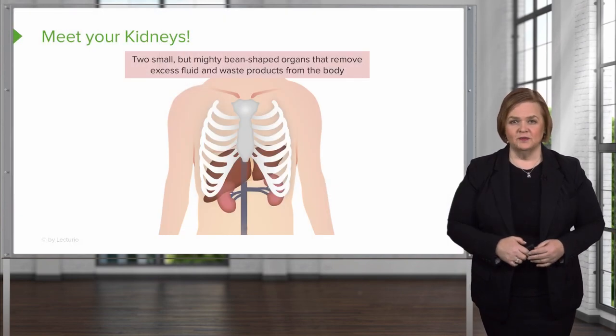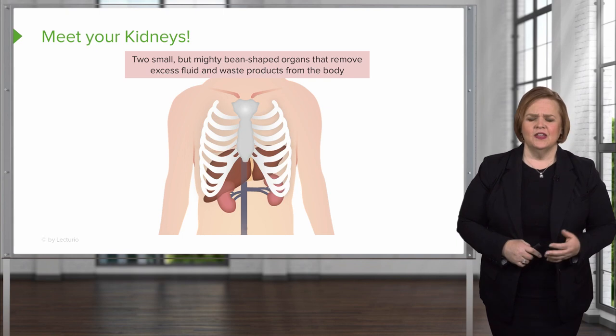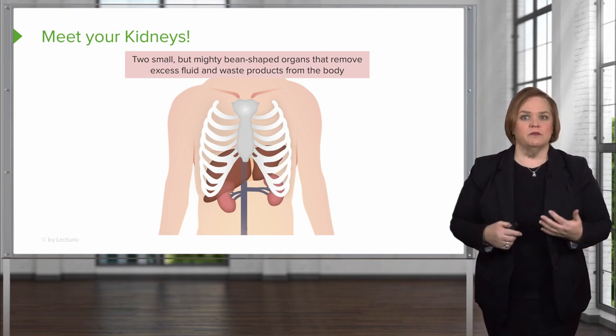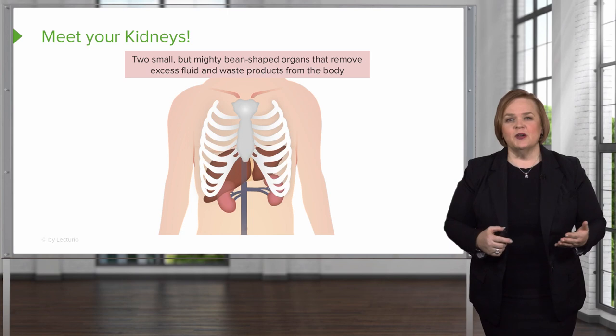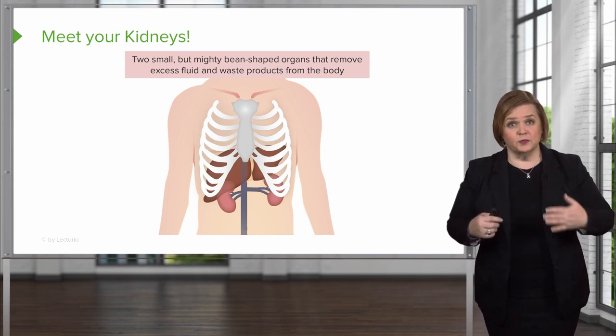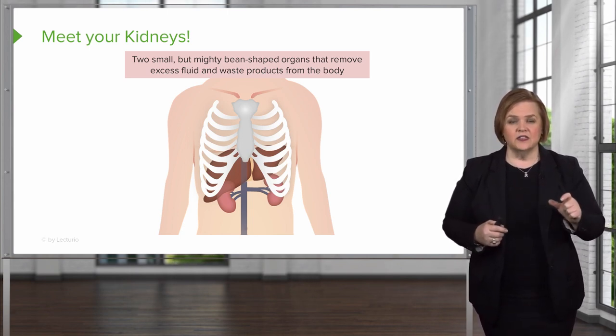Welcome to our video series on kidney anatomy. In this one we're going to go back to the very basics of your kidneys. We're going to look at the nephron, the cortex, the medulla, and the capsule. Meet your kidneys — I want to introduce you from a medical perspective and take a look at what these guys can do.